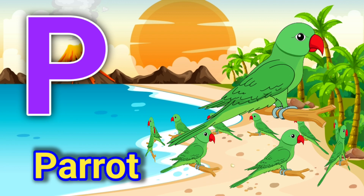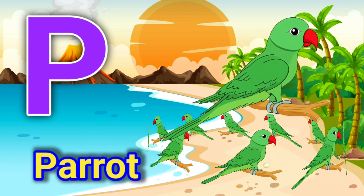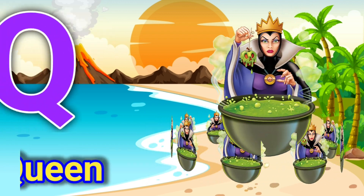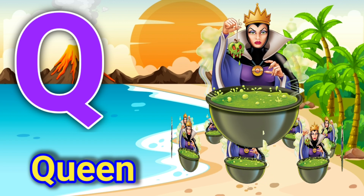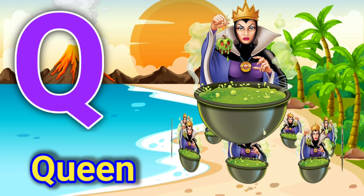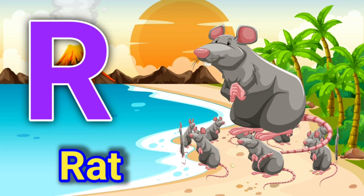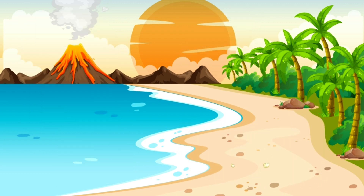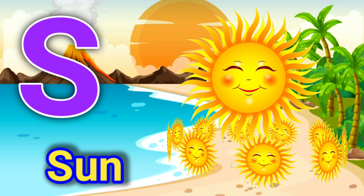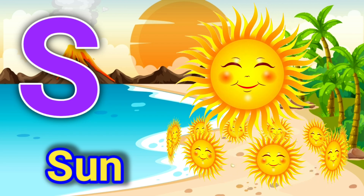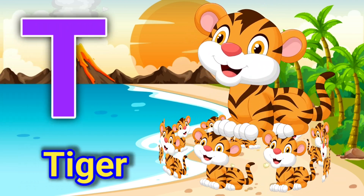P for parrot, Q for queen, R for red, S for sun, T for tiger.